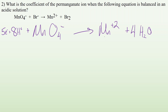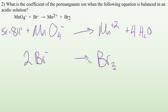Now I need to look at the second half-reaction: Br⁻ → Br₂. Balance everything that's not oxygen or hydrogen — I have two bromines on the right, so I need two on the left as well. Balance the oxygens: they're zero on both sides — check. Balance the hydrogens: they're zero on both sides — check. Now balance the charges by adding electrons. I have two minuses, so minus two on the left and zero on the right. I need to add two electrons on the right to bring that charge down to minus two.